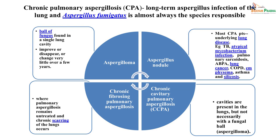Chronic pulmonary aspergillosis is a long-term infection due to Aspergillus fumigatus. It can present as an aspergillus nodule in patients with pre-existing lung disease such as TB, ABPA, or COPD. Aspergilloma is a ball of fungus forming in a pre-existing cavity, which can be asymptomatic or variable in course. Chronic cavitary pulmonary aspergillosis involves cavities in the lungs, with or without a fungal ball, and may progress to chronic fibrosing pulmonary aspergillosis with scarring and reduced respiratory efficiency.